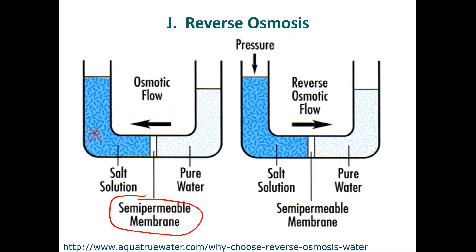Reverse osmosis is exactly the opposite — rather than allowing osmosis to happen naturally, you take your untreated water, add pressure, and it pushes the pure water through the membrane while the salts get trapped on the membrane. This is not usually done in large amounts unless it's for industry, because the pressure and membranes can be quite expensive. But for bottled water, where people are willing to pay a couple of dollars, why not?